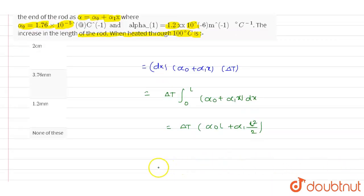So according to that, substituting the values, we will get the equation as 100 multiplied with 1.76 into 10 power minus 5 into 2, plus 1.2 into 10 power minus 6 multiplied with 2 square divided by 2.